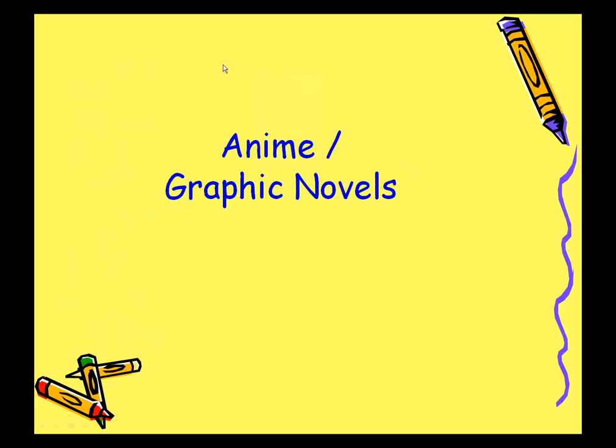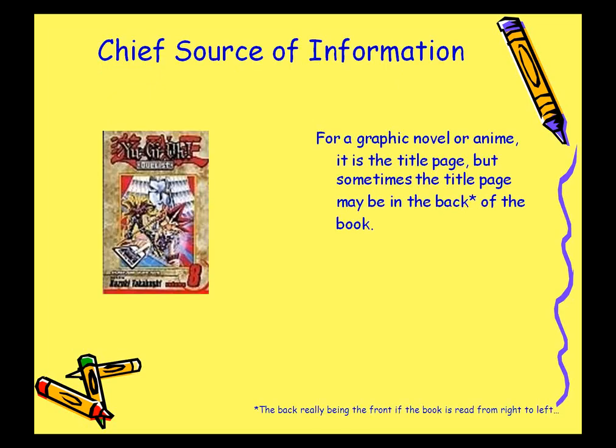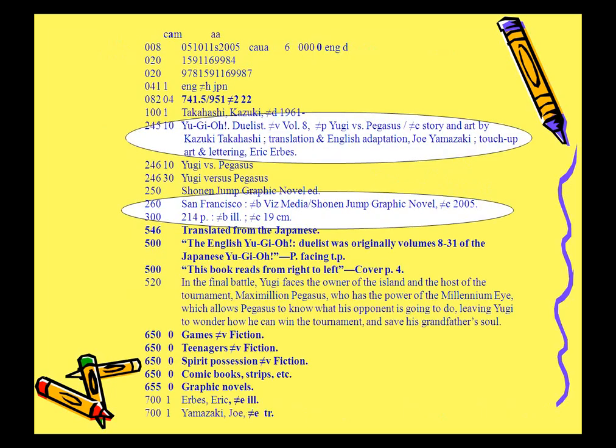Now we're going to move on to anime or graphic novels. One type of book that might be troubling is the graphic novel or anime. Again, the chief source of information is the title page — whether the title page is in the front or the back of the book. The placement of information in the 245 title field, the 260 publisher field, and the 300 physical description fields are the same in anime or graphic novels as in other books.